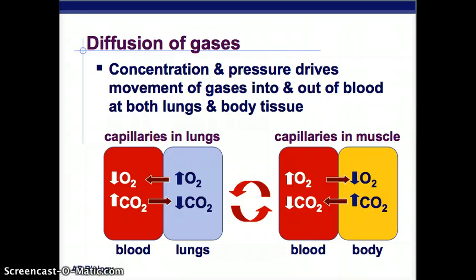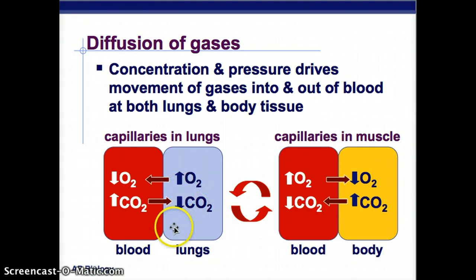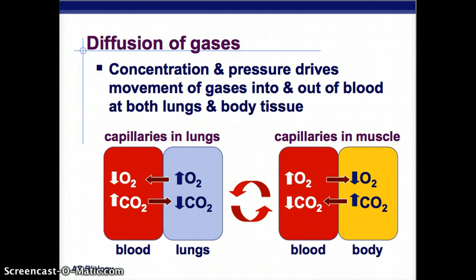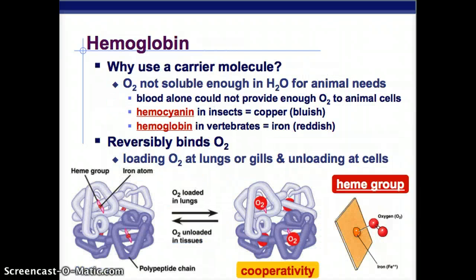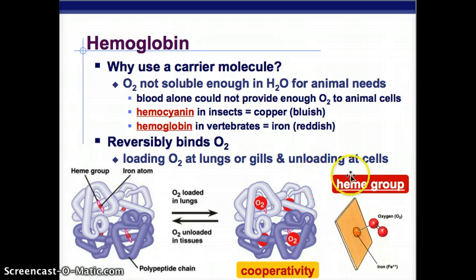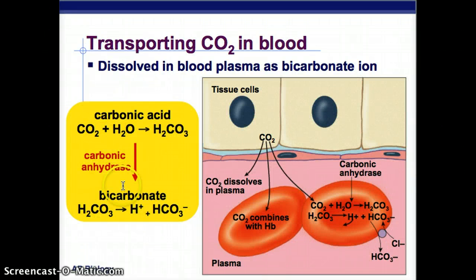Diffusion of gases: lower O2 moves toward higher O2, and CO2 moves toward lower CO2. In the lungs capillaries pick up oxygen and in the muscles they give it off - concentration pressure drives the movement of gases. We use hemoglobin as a carrier molecule because oxygen isn't soluble enough in water for animal needs; blood alone could not provide enough oxygen to cells. Hemoglobin reversibly binds oxygen - loading it in the lungs and unloading it at the cells. Carbon dioxide turns into bicarbonate.